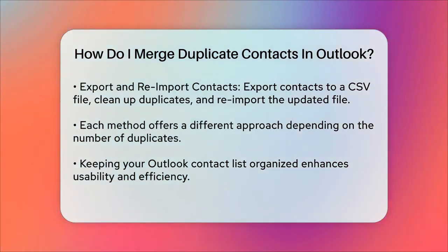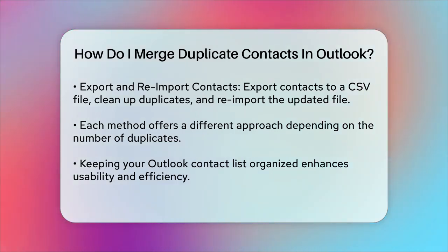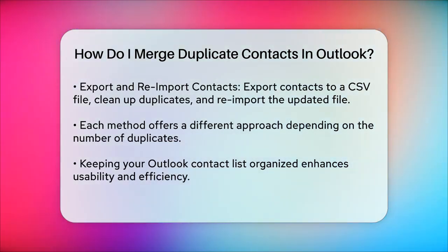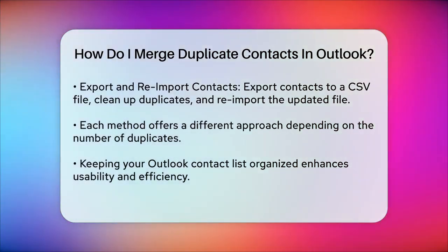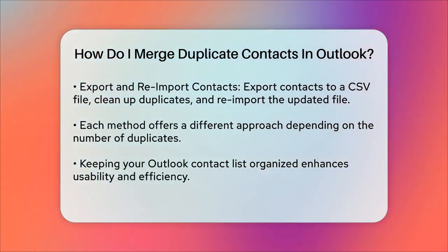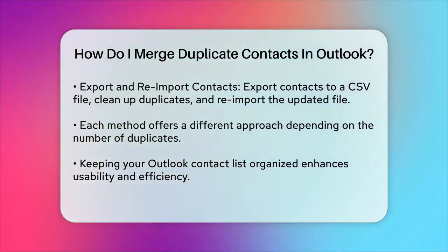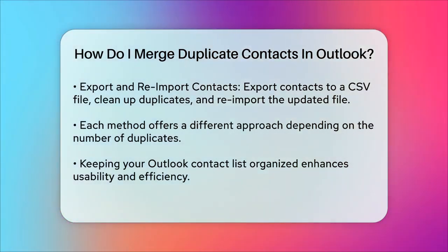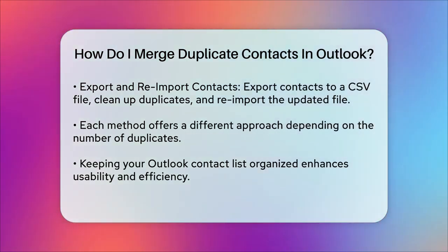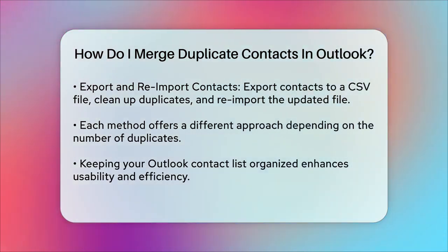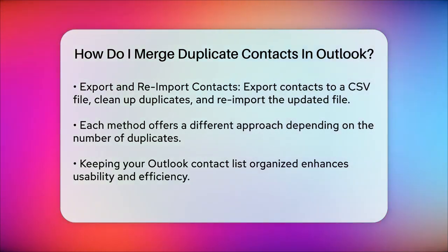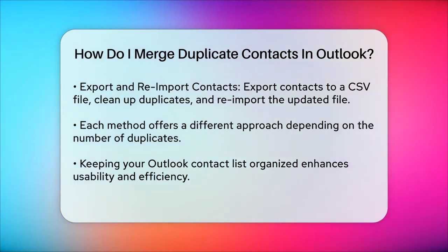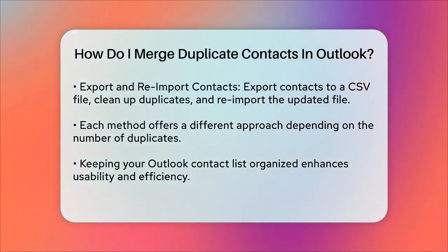Another method involves exporting your contacts, cleaning up the duplicates, and then reimporting them. You can export your contacts to a CSV file, remove the duplicates manually or using tools, and then import the cleaned-up file back into Outlook. This method is a bit more involved but effective for larger contact lists. By following these steps, you can keep your Outlook contact list organized and free from duplicate entries. Whether you prefer a manual approach or using software tools, there's a method that suits your needs.